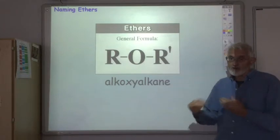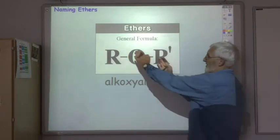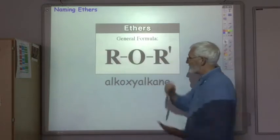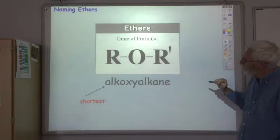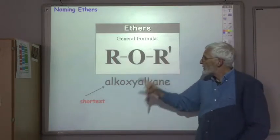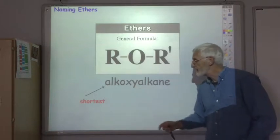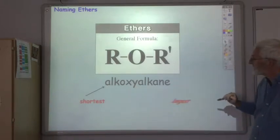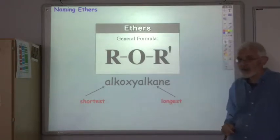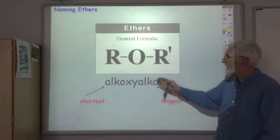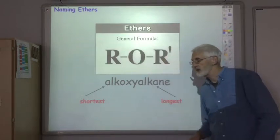But what order is it in? You don't work from left to right because you could pick that molecule up and turn it round. So the shortest of the two alkyl groups goes first and it's got the oxy ending, and the longest of the two alkyl groups has just its normal alkane name, irrespective of whether or not it's on the right hand side or the left hand side as it's drawn in the diagram.